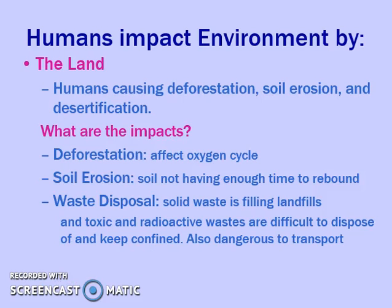We are causing more deforestation, soil erosion, and desertification, like I talked about with the Aral Sea. It's important to understand that our forests create a balance between our carbon and oxygen cycles, and when we cut down all these trees, we affect our oxygen cycle, meaning we don't have enough oxygen to breathe. Soil erosion has created less land that can support forests and agriculture, and can lead to desertification. As a growing population, we're also using more toxic and radioactive waste, and we don't know how to transport, dispose of, or store it.